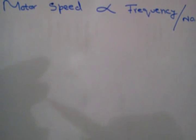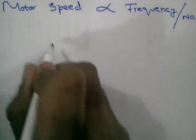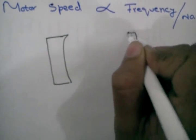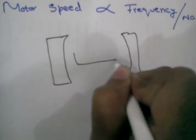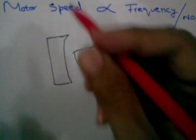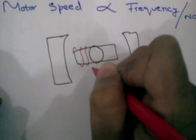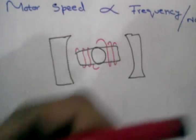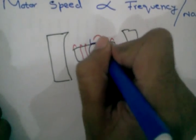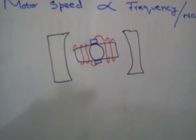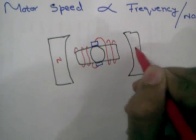So in order to explain this, I first draw the mechanical architecture of the motor. These are the carbon brushes, this is the commutator, this is the winding, and this is the north pole and this is the south pole.